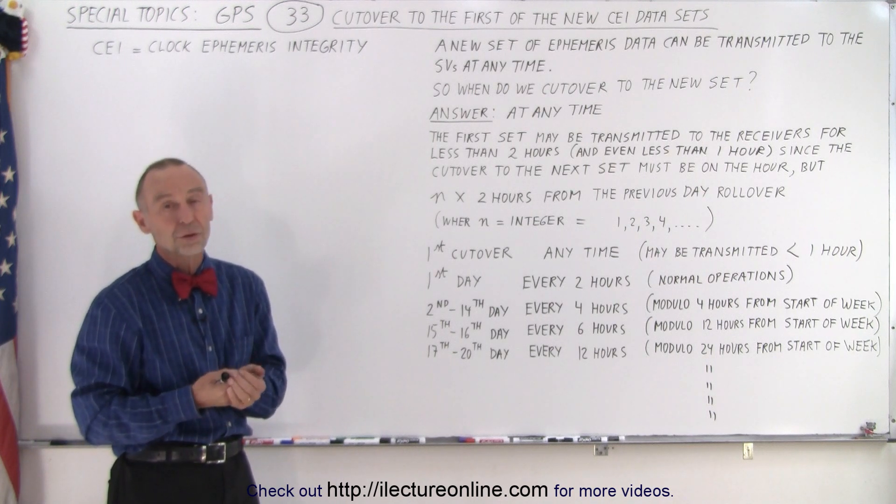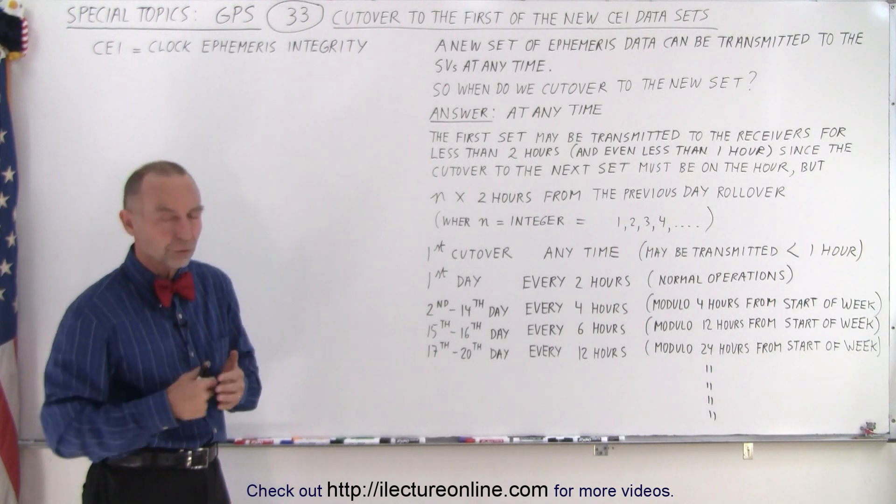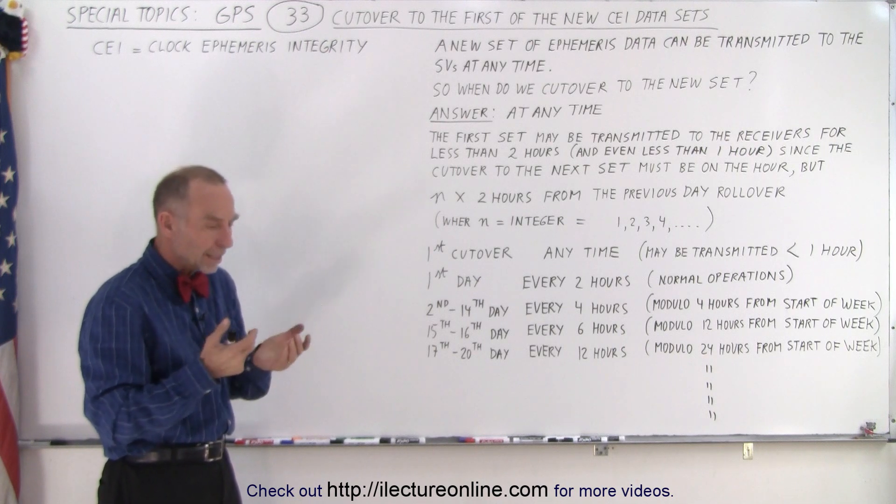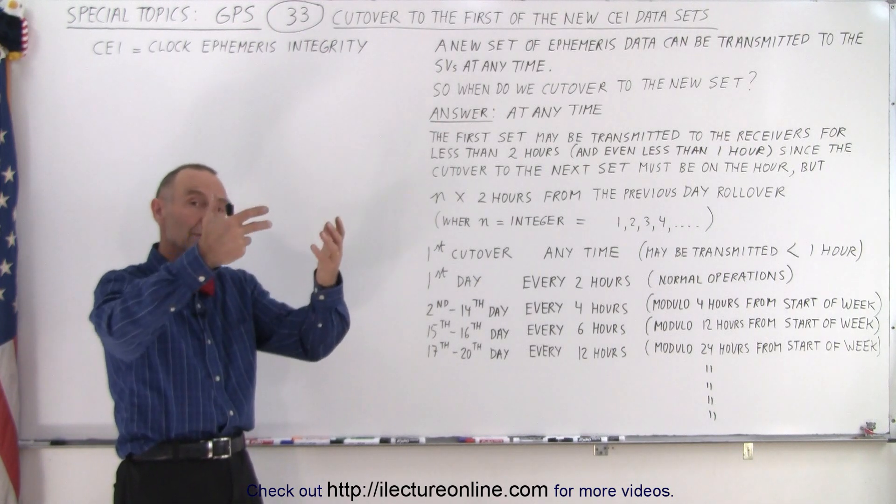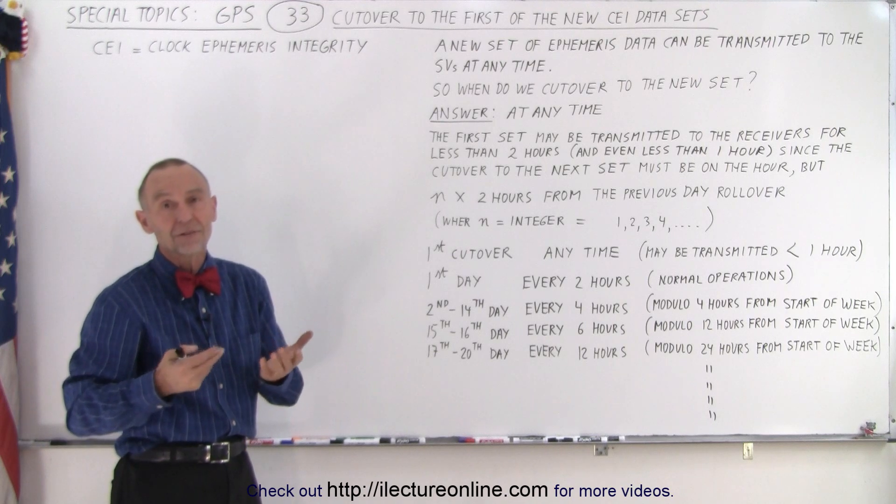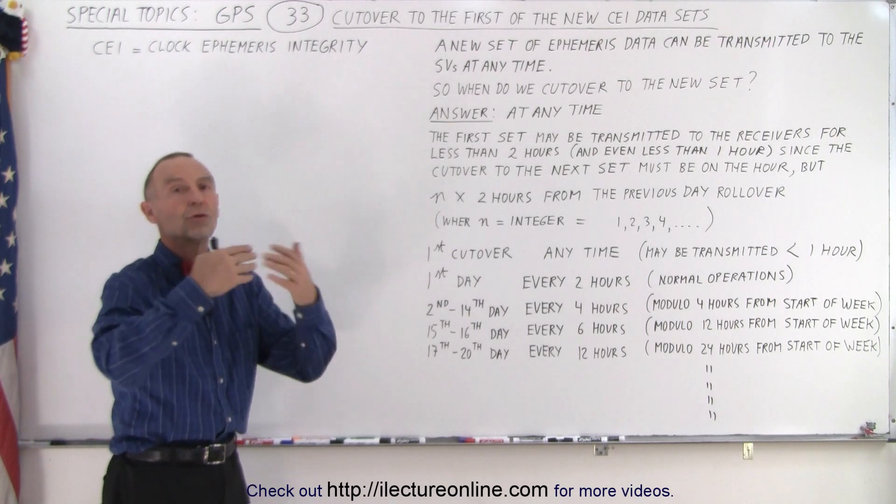Bigger and bigger errors are going to creep in if you use older and older data. So the idea is that the ground stations send new data to the SVs perhaps on a daily basis, and then you need to cut over to the new set.